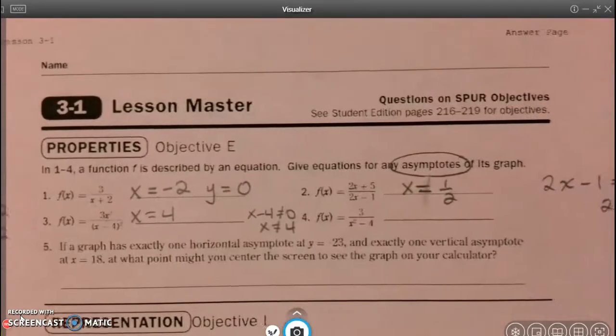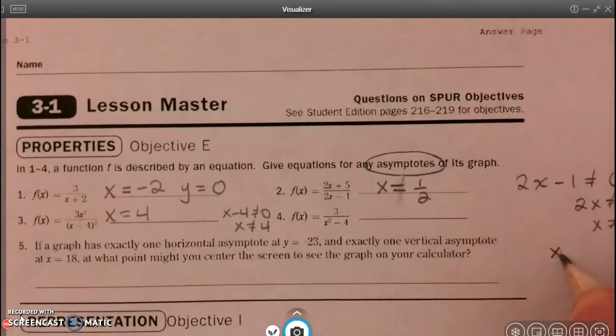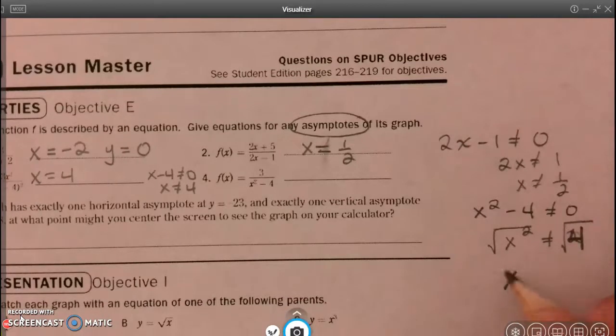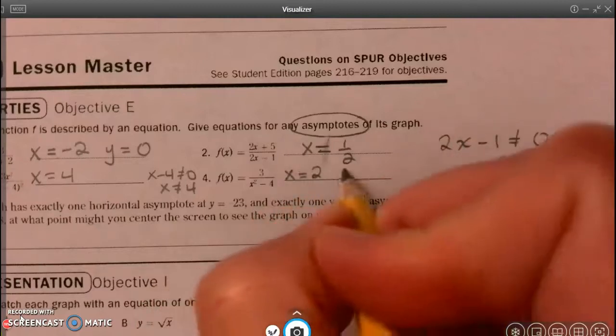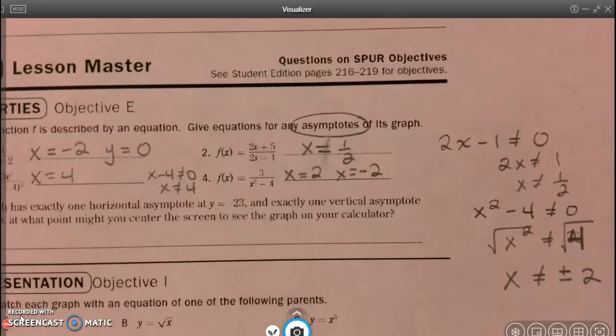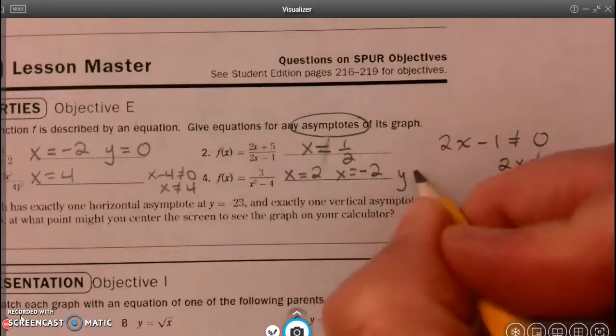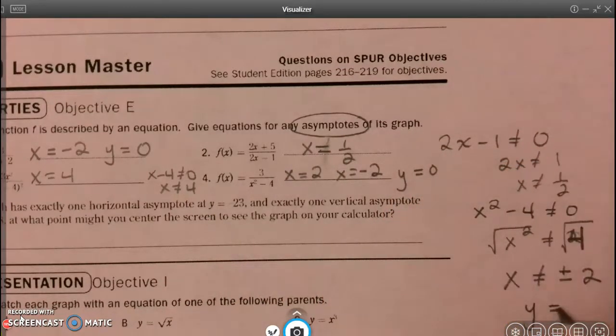All right, let's look at number 4. x squared minus 4 cannot equal zero. Therefore, x squared can't equal 4. And when I solve for that, I'm going to take the square root. Now, because I took the square root, that means that the x cannot equal plus or minus 2. Because the positive root of 4 is 2, and the negative root is negative 2. So I'm going to have two asymptotes, one at x equals 2, and one at x equals negative 2. And because I don't have a variable on top, I just have 3, and the denominator will never be zero, the value of this function will never be zero. Therefore, y equals zero is an asymptote, because y can't equal zero.